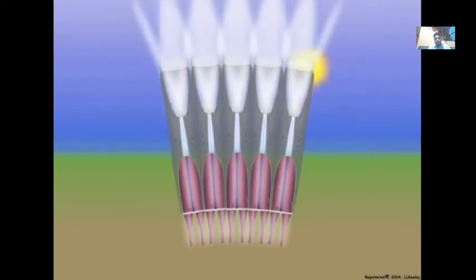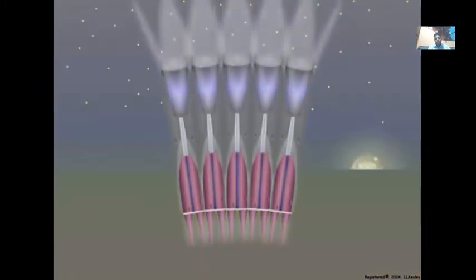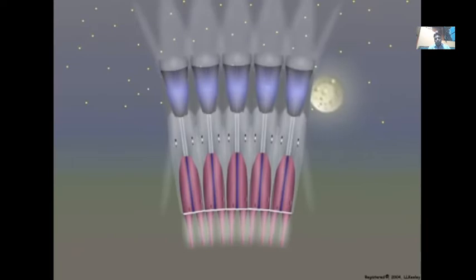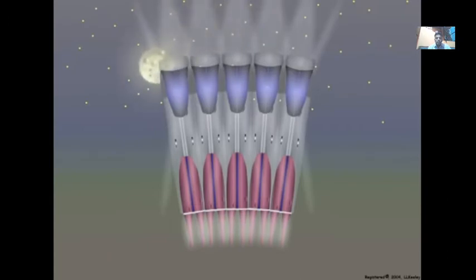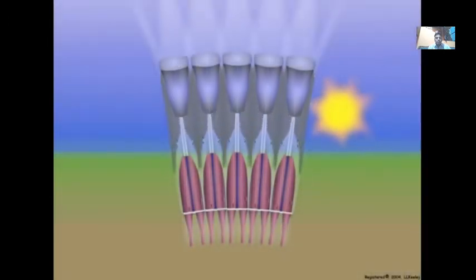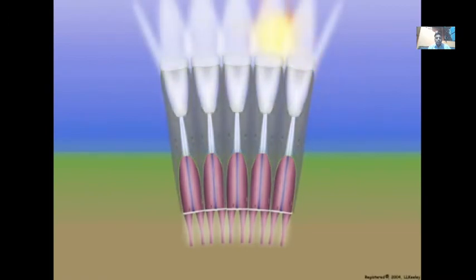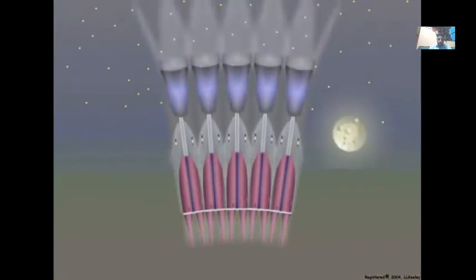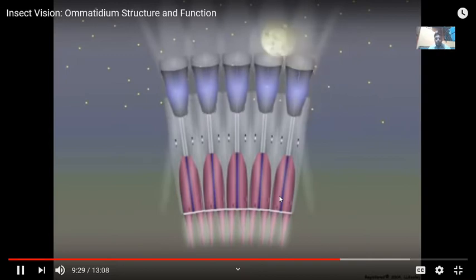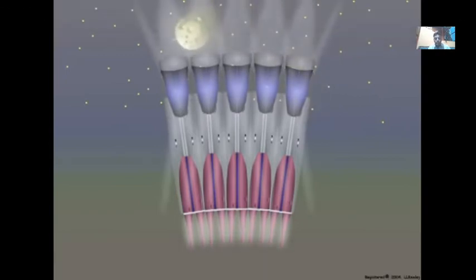Let us observe how the shielding pigments react in the scotopic ommatidia of the retina during several light and dark cycles to illustrate the interactions between adjacent ommatidia. Let us observe how the mosaic eye perceives the visual scene.